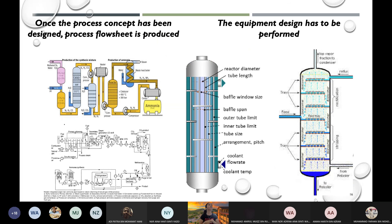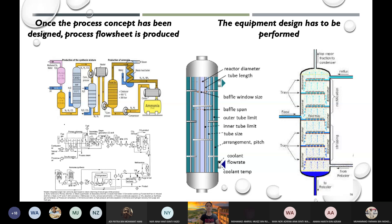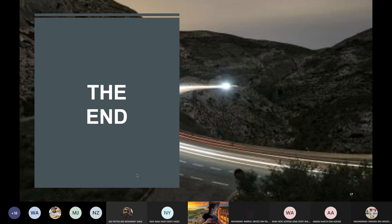Once you've established the process concept and have the process flow sheet, you can proceed to equipment design. Once you know the process flow sheet — say you have one reactor and one separation step — you must decide what type of reactor and what type of separation to use, since there are different types of each. That covers Chapter 1. Since we have time, I'll now move on to Chapter 2.